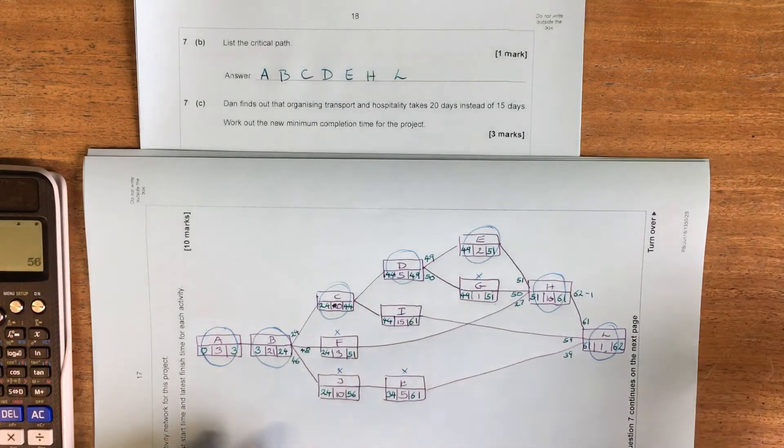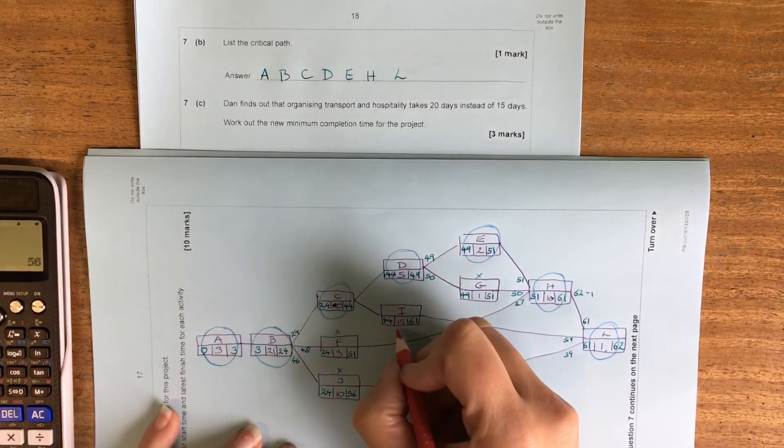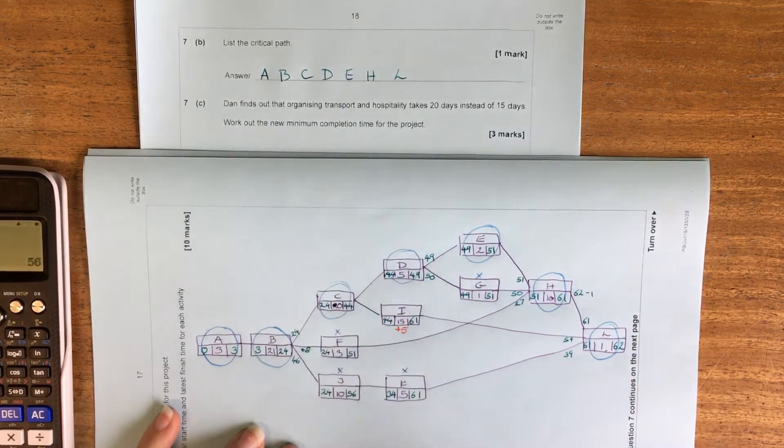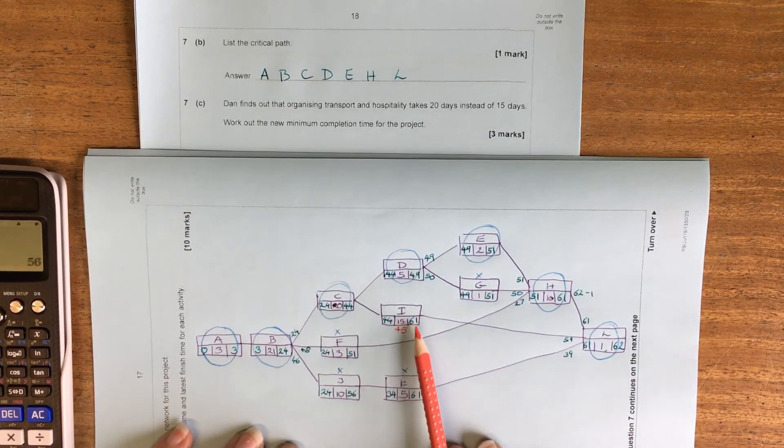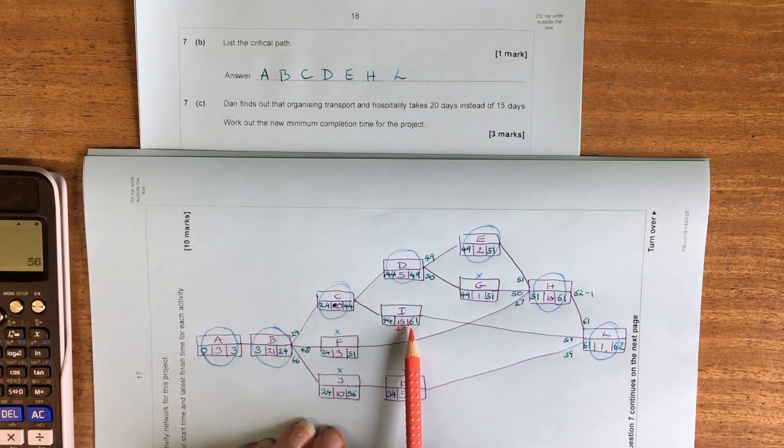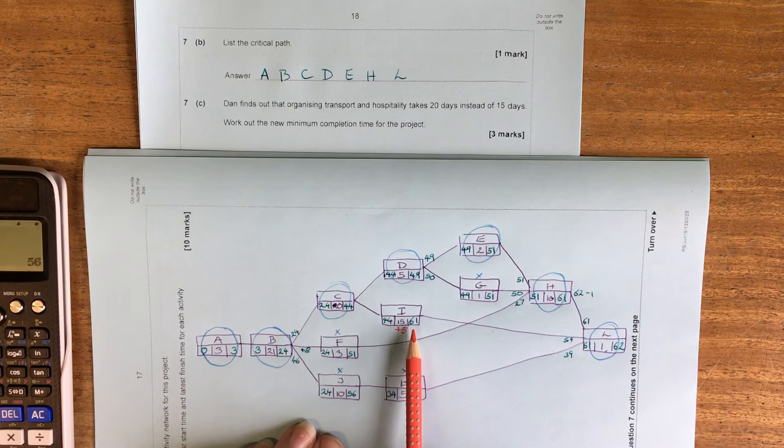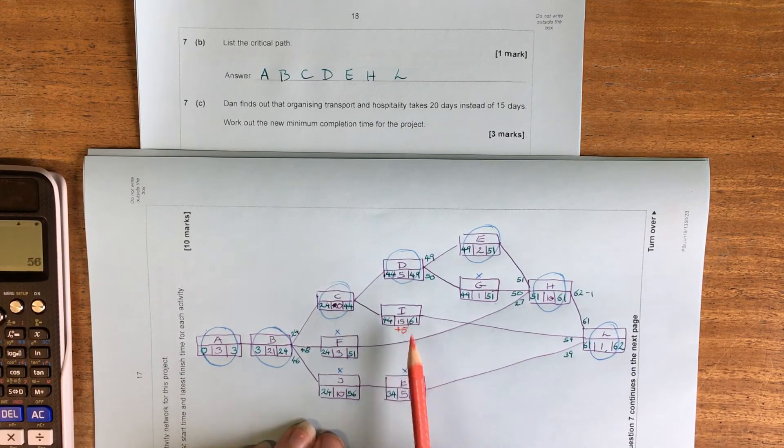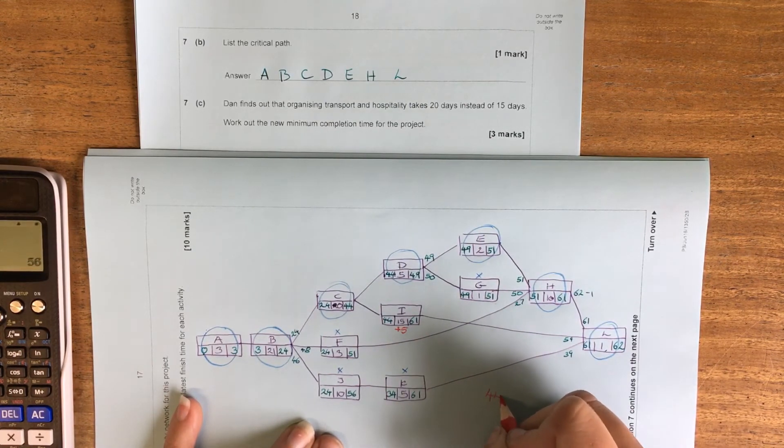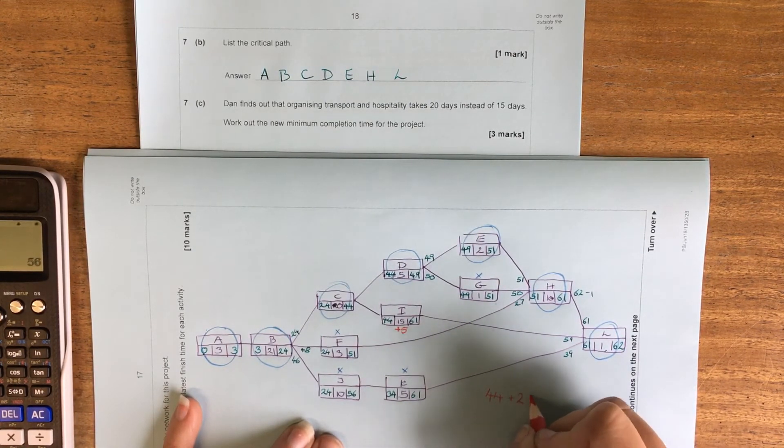So if we had another five days, is that going to push us past that 61? So 44 and 20, that means that we're not going to hit our 61 deadline because what we've got is 44 plus 20, which is 64.